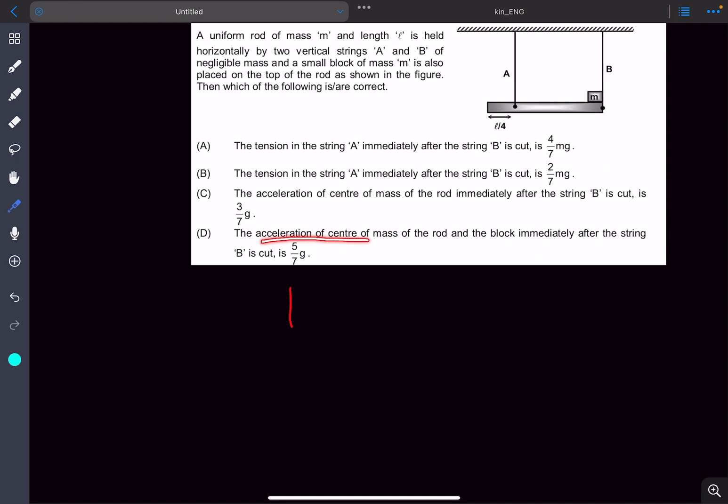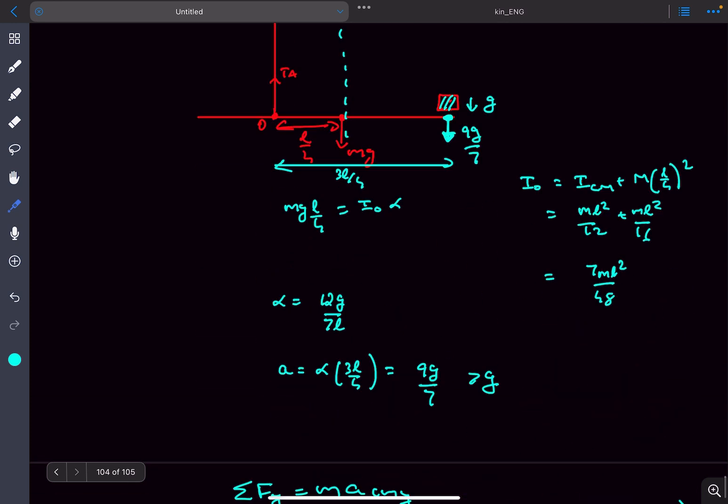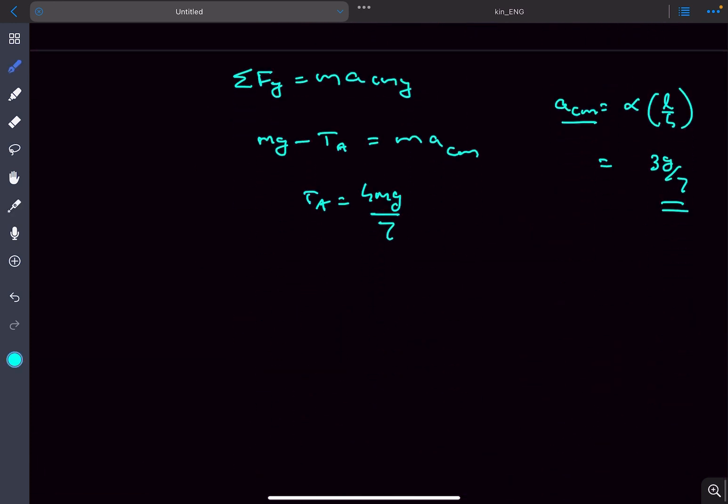In the fourth option they are asking the acceleration of center of mass of the rod and the block, which means of the combined system immediately after the string is cut. The center of mass of the rod is moving down with an acceleration of 3g by 7.